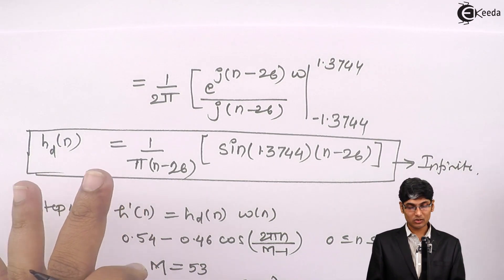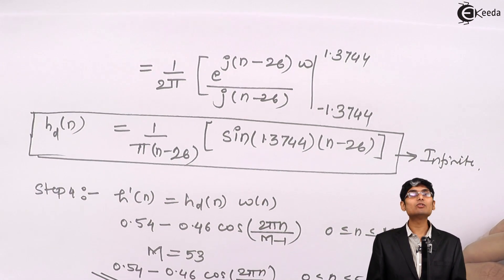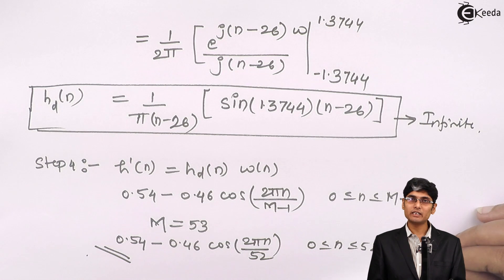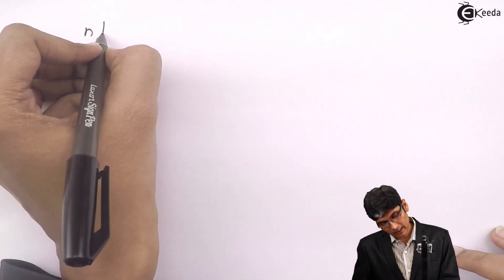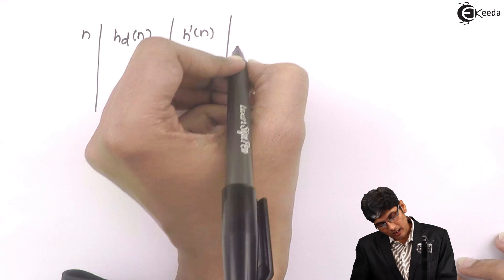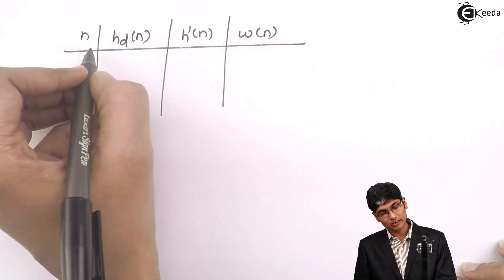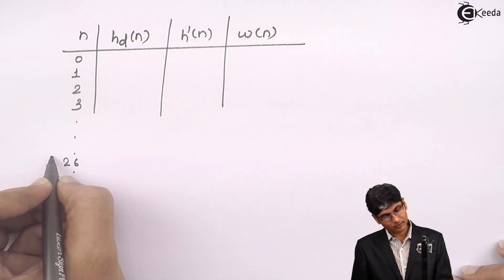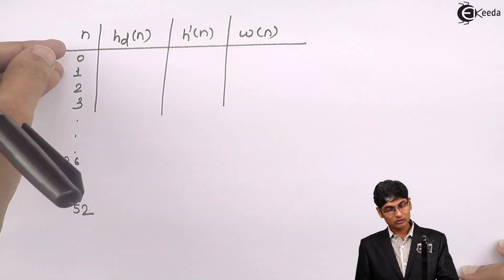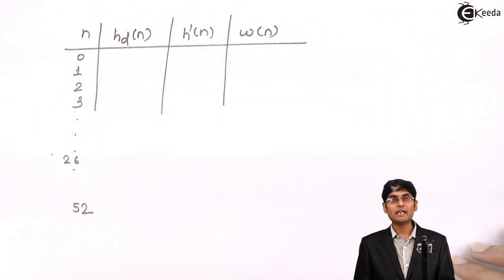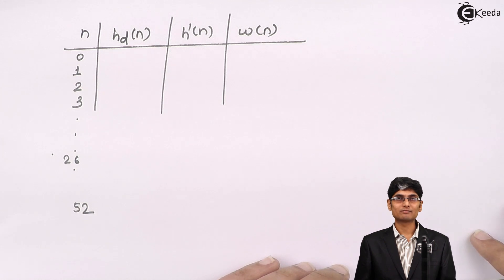Due to the linear phase property of the FIR filter, only half the coefficients need to be computed independently — the other half are symmetric. In an exam setting, you would form a table for n = 0 to 52, compute hd(n) and w(n), multiply them to get h'(n), and the problem is solved. The audience is encouraged to complete this computation.